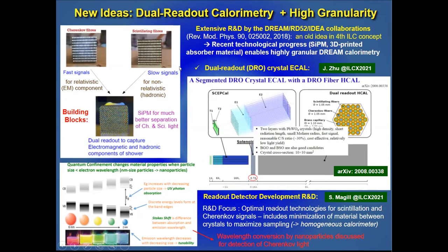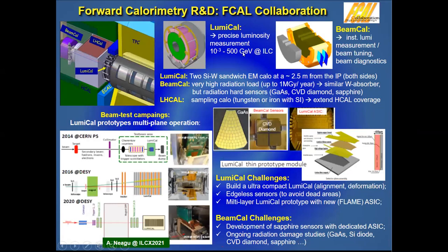Another emerging point is dual-readout calorimetry. There was extensive R&D work done by the DREAM and RD52 collaborations. Things became more interesting with the introduction of SiPMs, which allow better separation of Cherenkov and scintillation light. Several ideas were presented at the LCWS workshop, including readout detector developments. Forward calorimetry is very important for luminosity measurements and instantaneous luminosity management for beam feedback. The BeamCal needs to operate under very high radiation loads; different sensors — gallium arsenide, CVD diamond, and sapphire — are being developed. The key element is the development of an ultra-high compact luminosity calorimeter installed very close to the beam pipe.